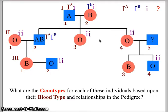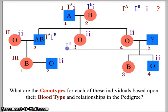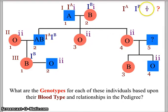Now what else can we figure out? We know the daughter in generation three, individual one, has B blood and she got that B allele from her dad. We know that her mother can only give her a little i. So her genotype is I-B, little i — she is heterozygous for B blood.